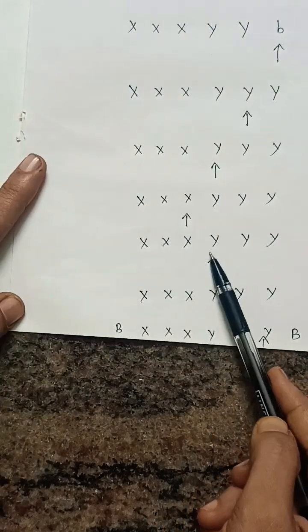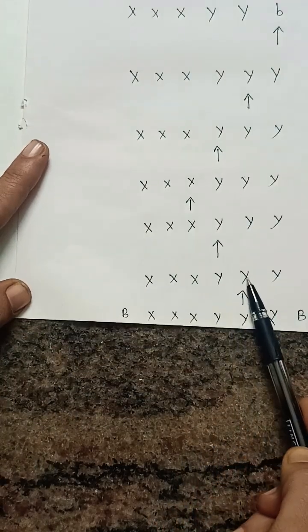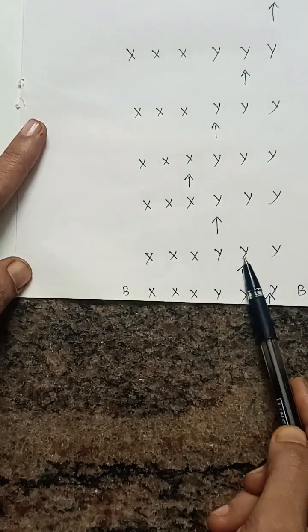When I move right, I got Y. So, replace Y with Y and move to right. And again move to right. Read Y to Y.